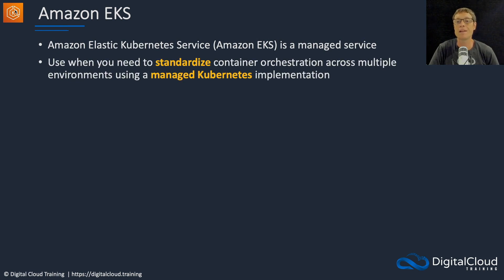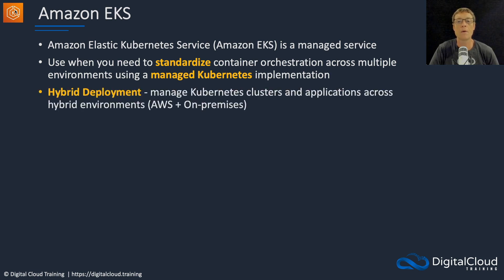You use EKS when you need to standardize container orchestration across multiple environments using a managed Kubernetes implementation. When you're running Kubernetes, you're still essentially running Docker containers, and this provides an orchestration layer over the top. There's a hybrid deployment option where you manage Kubernetes clusters and applications across hybrid environments — that is AWS and on-premises. You can also standardize the orchestration layer across other clouds like Microsoft Azure.